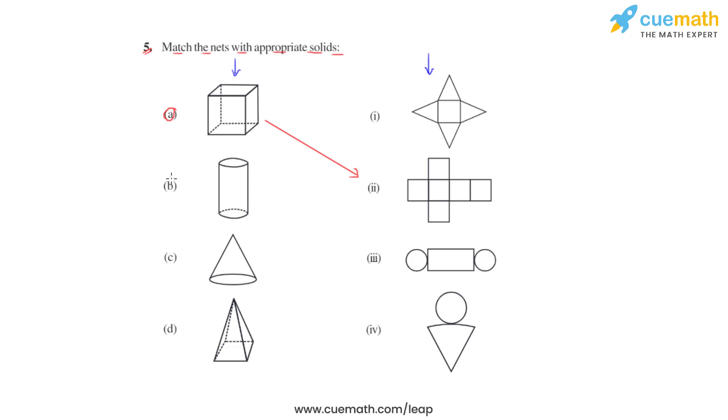Let us move on to the next solid which is a cylinder. In case of a cylinder, we see that the top face and the bottom face, they are both circles. Based on this observation, we can say that the third net consists of two circles at both its ends. The third one is an appropriate net for the cylinder.